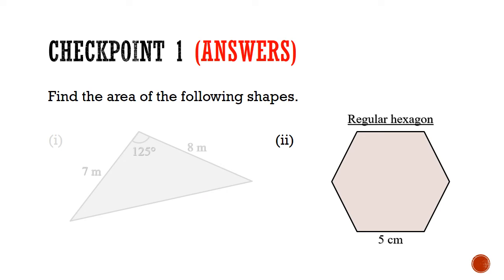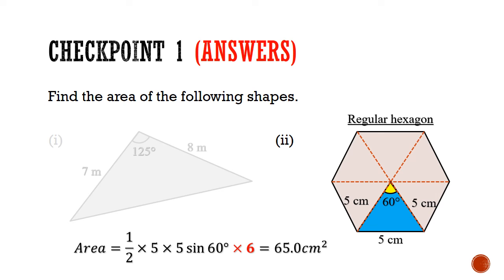In part 2, we can divide the regular hexagon into 6 congruent equilateral triangles. Each side of this equilateral triangle is 5 cm long, and the included angle is 60 degrees. So the area of each triangle is half times 5 times 5 times sine of 60 degrees. And since there are 6 triangles in total, this will give us a total area of 65.0 cm squared.